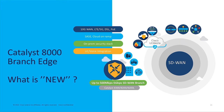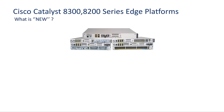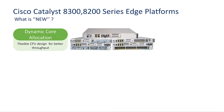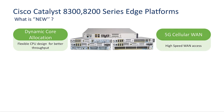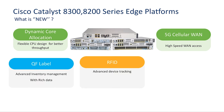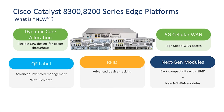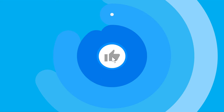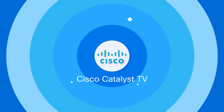So, what is new on the Catalyst 8000 branch edge platforms? There are a few noticeable enhancements which I will mention here at a high level, with detailed explanations coming in upcoming videos. These new enhancements include: dynamic core allocation, providing flexibility to assign CPU cores based on business needs; 5G cellular WAN for high-speed WAN access and cloud connectivity for SASE; RFID and QR labels for smart device tracking and inventory management; and next-generation modules for high-speed WAN and LAN with advanced voice capabilities. Thank you for watching — please provide your valuable feedback.